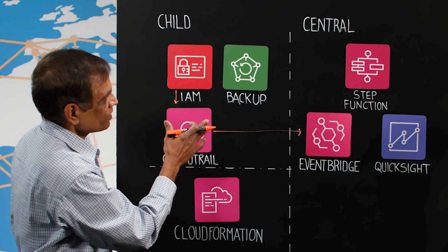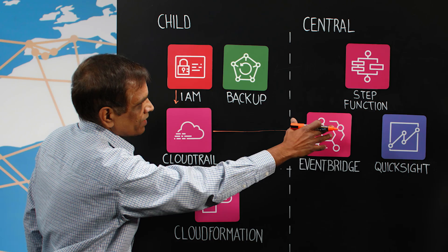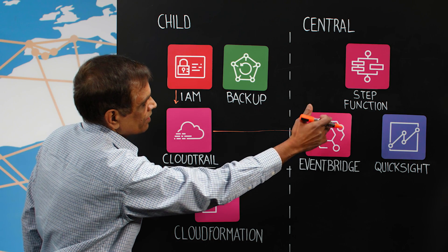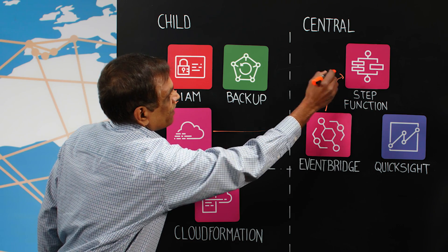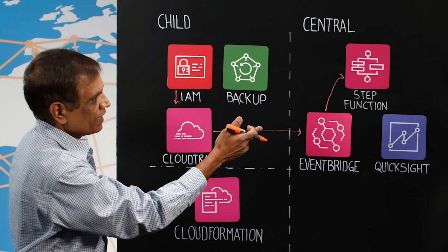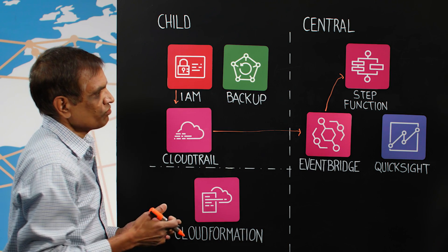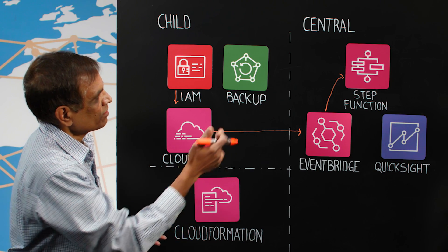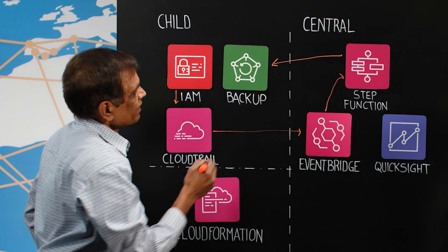This is a child account, one of the child accounts—we have more than 150 accounts. This is a central account where we manage all this central backup solution. So this EventBridge triggers a Step Function and the Step Function takes the CloudTrail as a payload. The Step Function is a series of Lambda functions, and the Lambda function creates a backup.